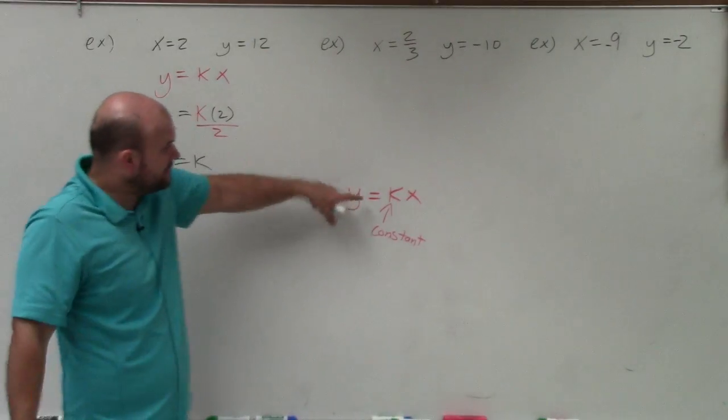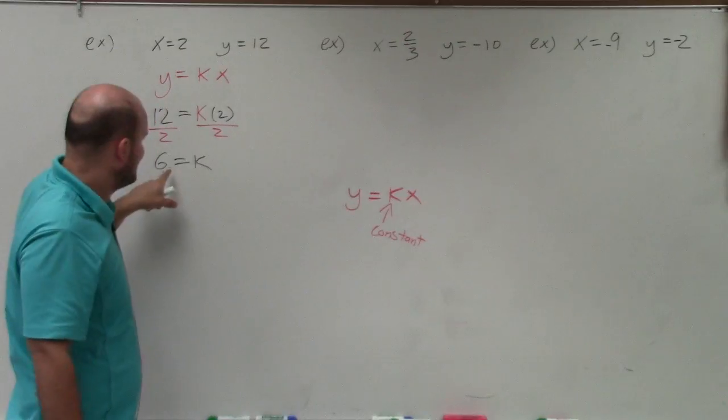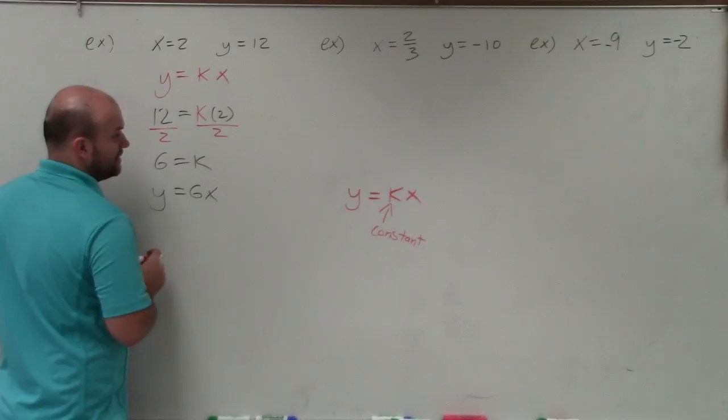So to write a direct variation, direct variation is going to be for any two values of y and x, but with the constant k. So that would be y equals 6x. And that would be my formula in direct variation.